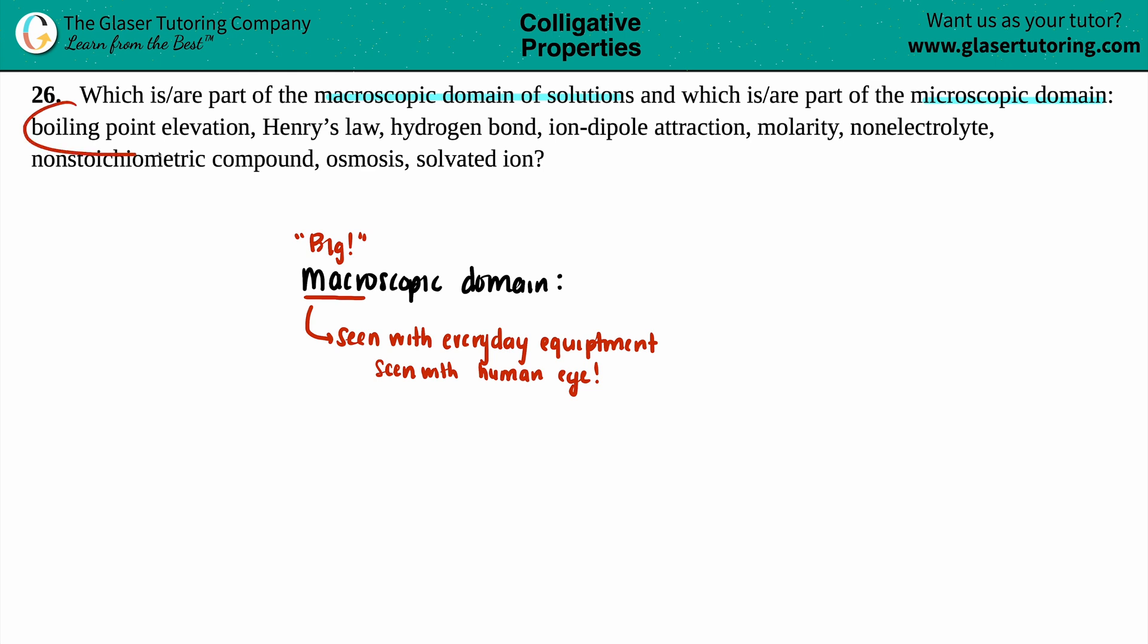So the first one they say is boiling point elevation. Elevation means that you are increasing. To elevate is to go up, depress is to go down. So boiling points will always go higher if they are in certain solutions. Can we see this raise or rising in boiling point with everyday equipment or seen with our human eye? Yeah, we could use a thermometer. We could mix up a solution and see the boiling point increase. So this would be part of the macroscopic domain.